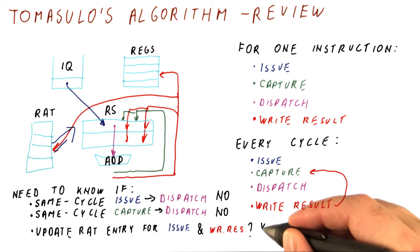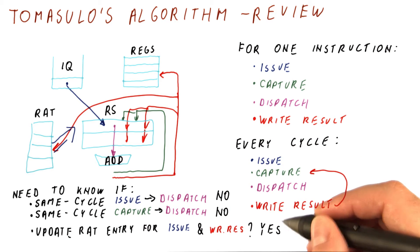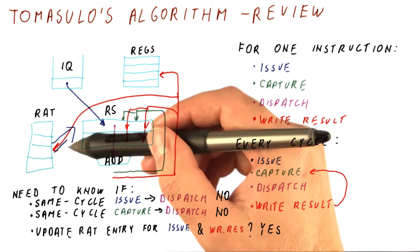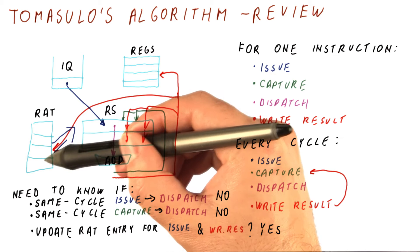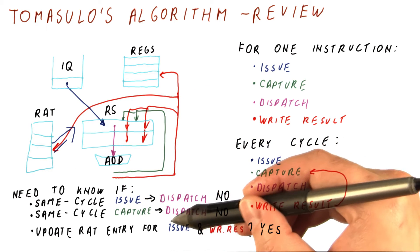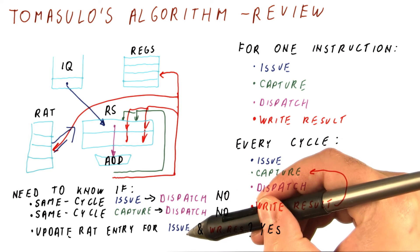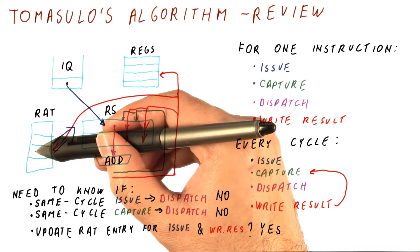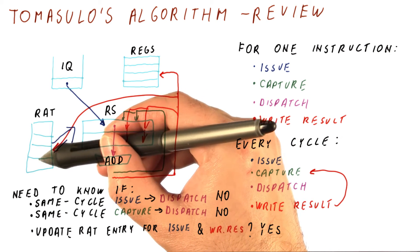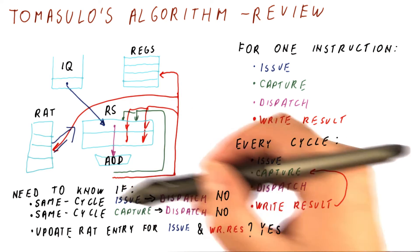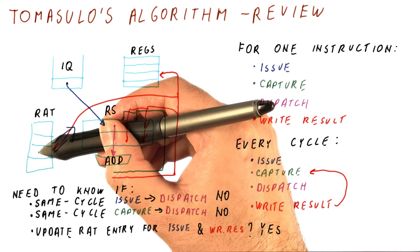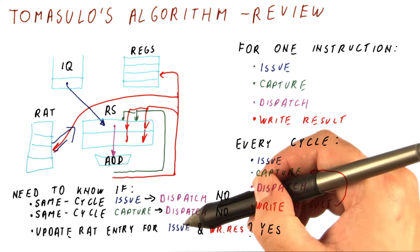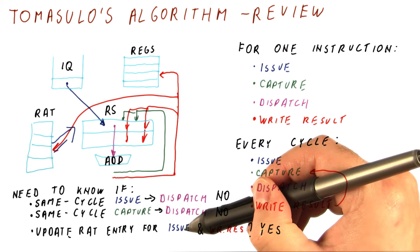And the answer to this is typically yes, because this is not something where the entry needs to be written once and then written again. What we need to ensure is that the instruction that is issuing ends up being the one whose value is kept in the RAT. So pretty much these two write to the same entry in the RAT. The end result of that should be the thing that the issuing instruction wrote.